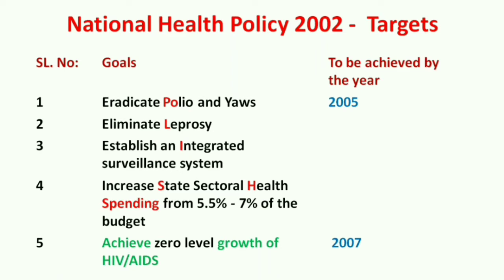For 2005 there are four targets. First: eradicate polio and yaws. Second: eliminate leprosy. Third: establish an Integrated Surveillance System. Fourth: increase state sectoral health spending from 5.5% to 7% of the budget — meaning during 2002 states were spending only 5.5% of the total budget, and that had to be increased to 7% by 2005.